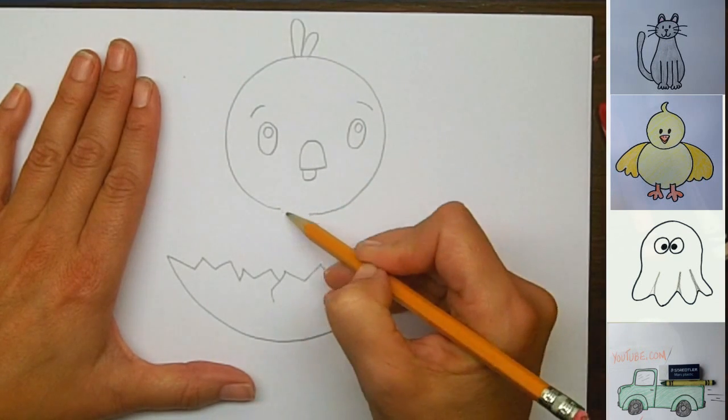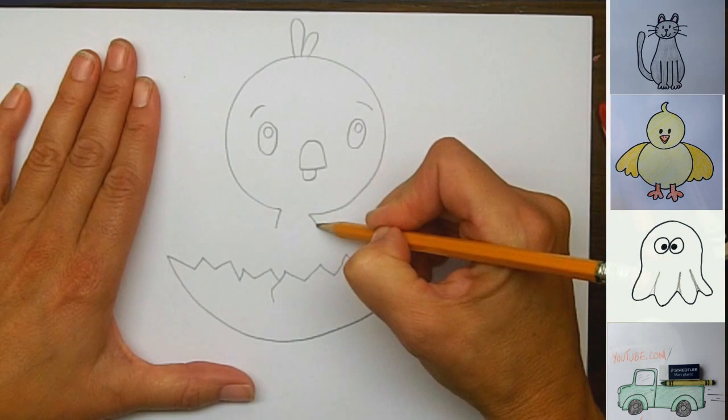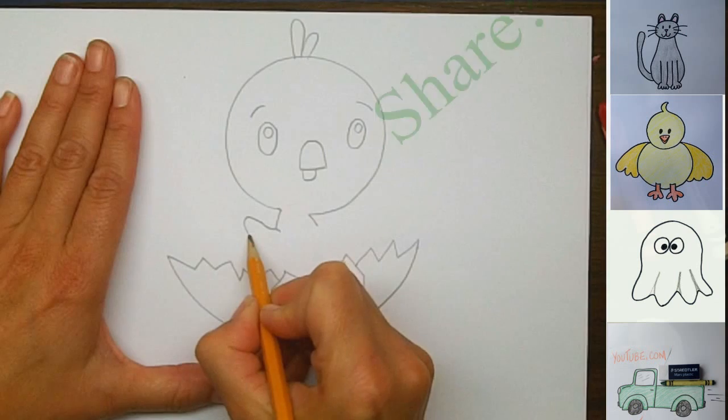Okay, so now we're going to make his neck. And it's just going to be a very short little neck, coming down like this. And as soon as we get to the bottom of his neck, we're going to have little tiny wings, just like this.